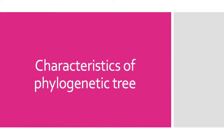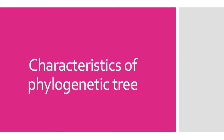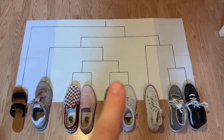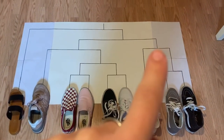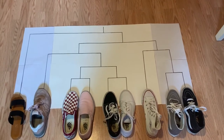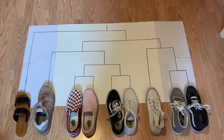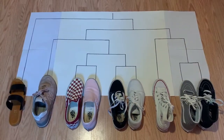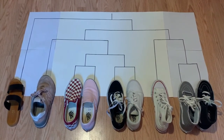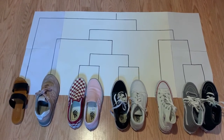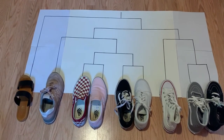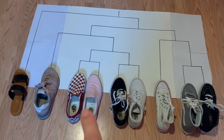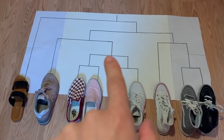Before we begin breaking down this phylogenetic tree, I would like to go over some of its qualities so the explanation makes a lot more sense. In phylogenetic trees, an internal node represents a divergence event, meaning a splitting apart of a single group into two descendant groups. They represent a common ancestor that existed before divergence took place. The most recent common ancestor is the most recent individual from which all the organisms of the set are descended. For example, the most recent common ancestor between the old-school low-top Vans and the slip-on low-top Vans is represented by this internal node.